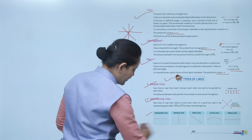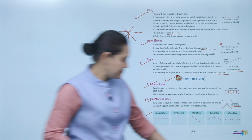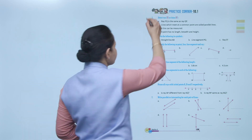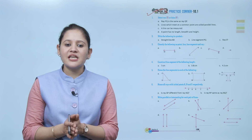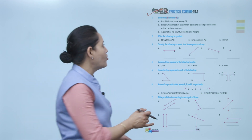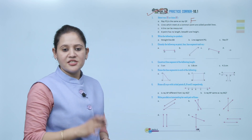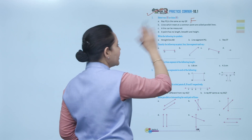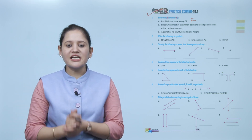There are different types of lines: horizontal line, vertical line, slant line, curve line, and wavy line. Next is practice corner 10.1. State true or false: ray PQ is the same as ray QP. That is false, because the first point shows the initial point of the ray. If it starts with P we write PQ — we can't write QP. So that is false.